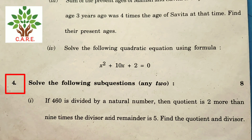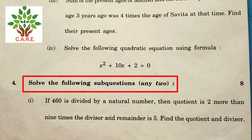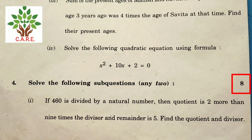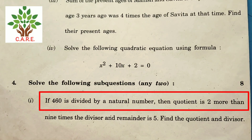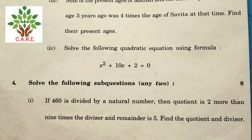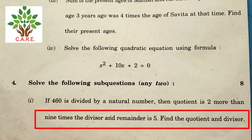Question 4: Solve the following sub-questions, any two, 8 marks. Question 4.1: If 460 is divided by a natural number, then the quotient is 2 more than 9 times the divisor and the remainder is 5. Find the quotient and divisor.